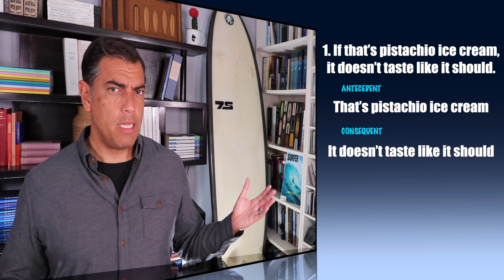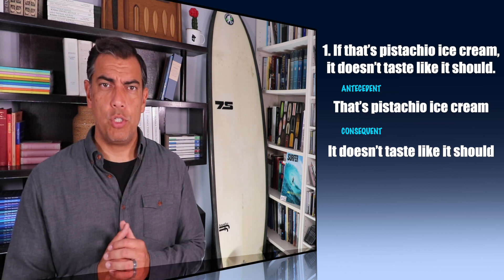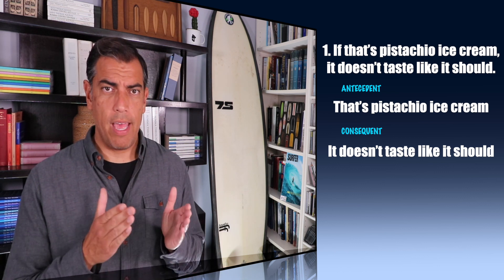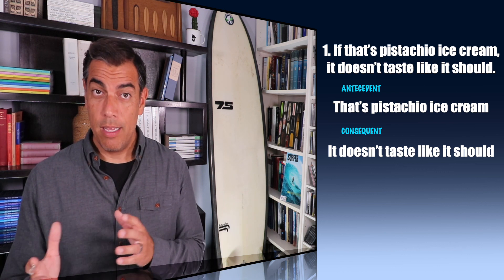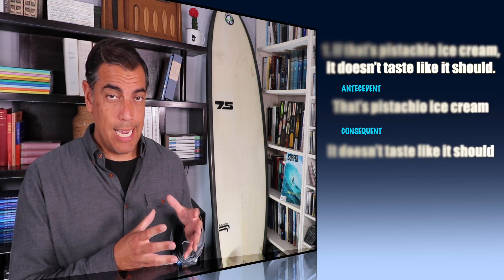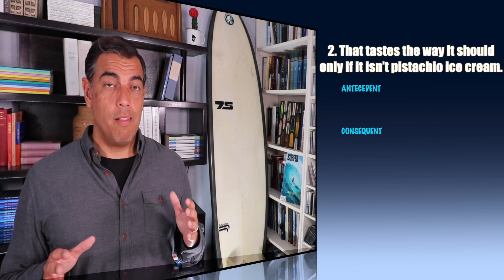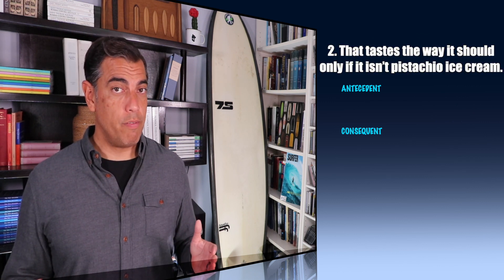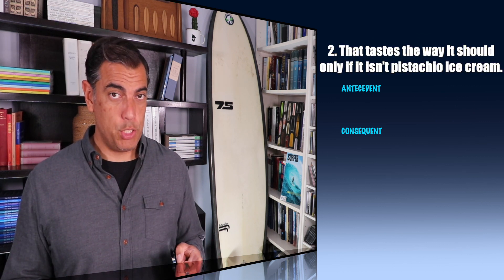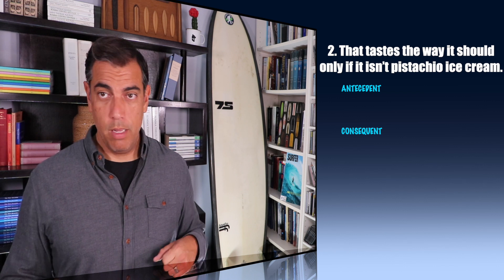Typically in these conditionals, it's an if A, then B — A is the antecedent, B is the consequent. Number two: that tastes the way it should, only if that's not pistachio ice cream.